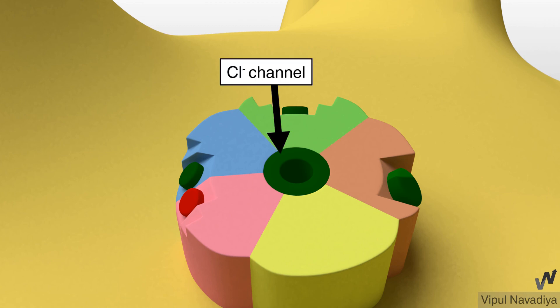It has a chloride channel associated with it. Chloride entry through the channel hyperpolarizes the neuron, or in simple words calms the neuron down.